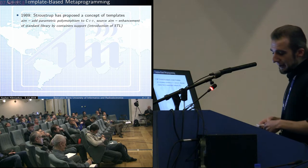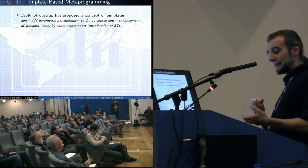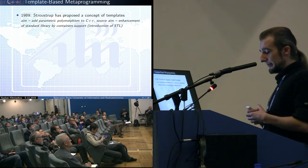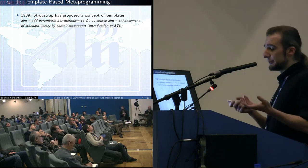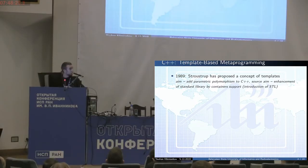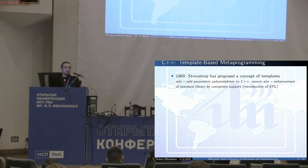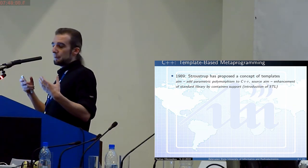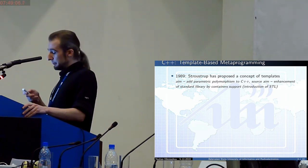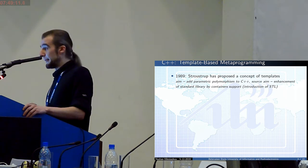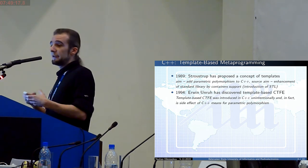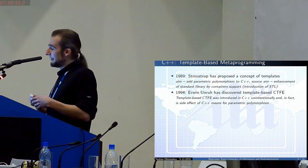Getting back to history: in C++, the optimization appeared as part of metaprogramming based on templates. Templates were provided by the author of the language, and parametric polymorphism was introduced. The standard library was developed because the STL was not existing in those days, and the family of algorithms for container types was a must-have. The template mechanism was suggested to make algorithms independent. But in 1994, it appeared that this mechanism could also run optimization during compilation.